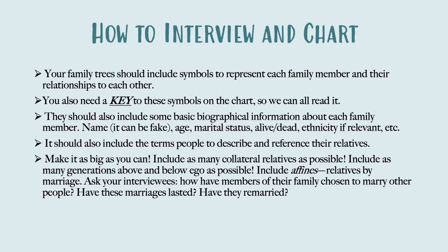Make this chart as big as you can. Include as many collateral relatives as possible — your aunts, uncles, cousins, etc. — and as many generations above and below ego as possible, but only as much as ego knows. You don't have to send your friend to ask their parents about generations of grandparents they can't remember. Also include affines — relatives by marriage — and ask how members of your interviewee's family chose to marry, whether those marriages lasted, whether the new person was accepted into the family, and whether people who divorced have subsequently remarried.